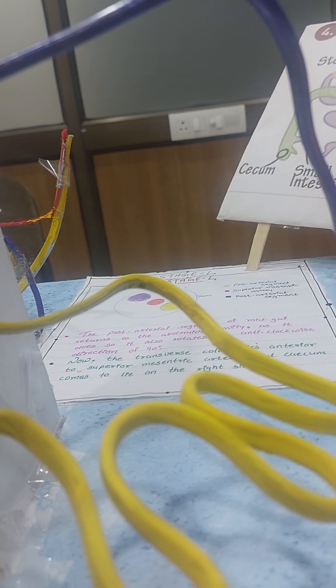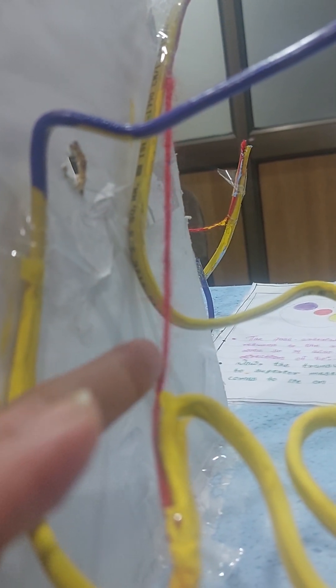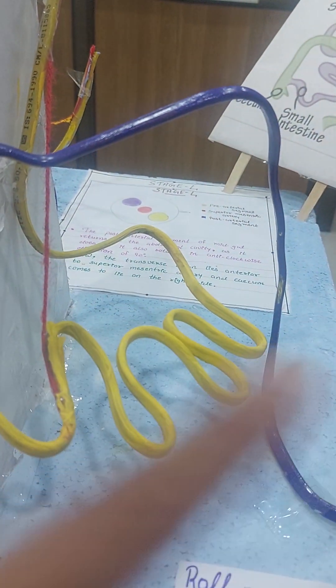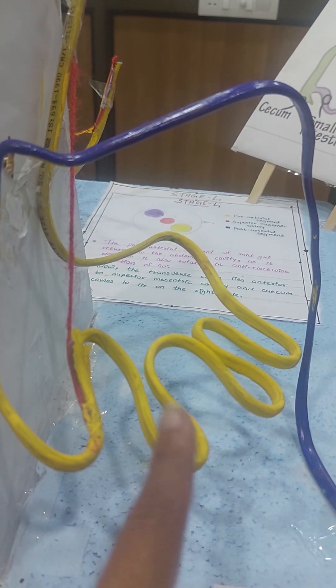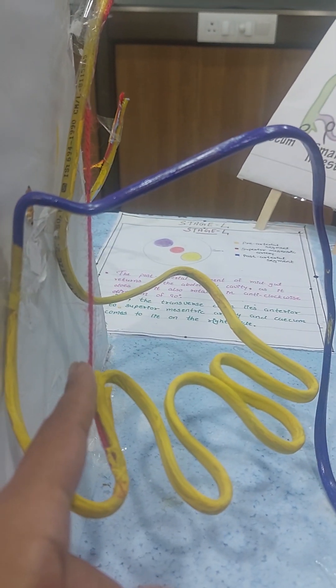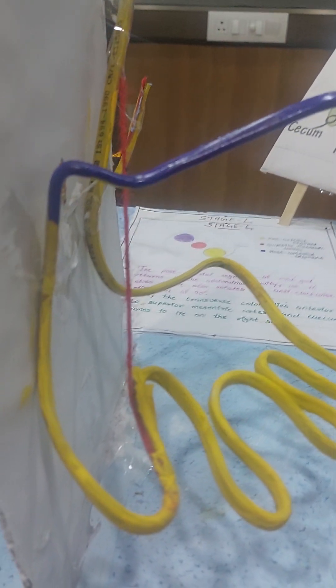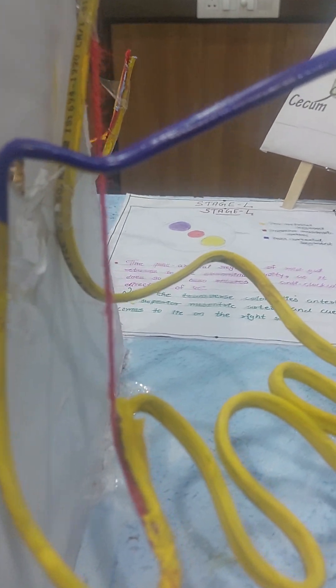As a result, the loops of jejunum and ileum, they pass behind the superior mesenteric artery. This is the pre-arterial loop, this is the post-arterial loop in blue, and this is the superior mesenteric artery in red. They pass behind the superior mesenteric artery into the left half of the abdomen.